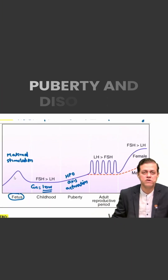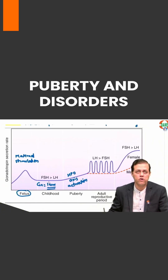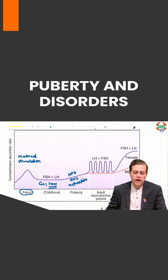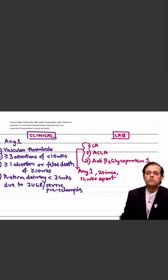Maternal stimulation would lead to high gonadotropins in fetal life, but in childhood the gonadotropins would be very low. In the pubertal phase, there is activation of the HPO axis, leading to a rise in gonadotropin levels.